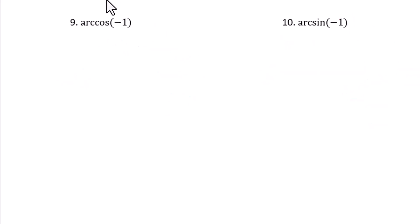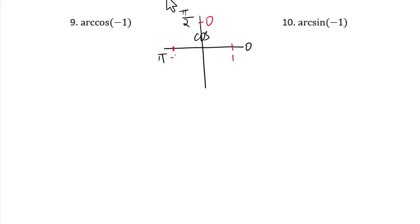Question 9: arc cosine of negative 1. Looking at the cosine graph with values 1, 0, negative 1 corresponding to angles 0, pi over 2, pi — arc cosine of negative 1 equals pi.